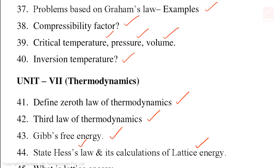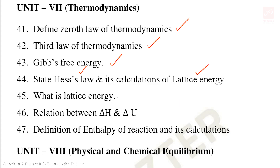In Unit 7 thermodynamics, important questions also include Hess's law statement, what is lattice energy, lattice energy calculation, the relation between delta H and delta U, and enthalpy of reaction — its definition and calculation. These are the 7th unit 2 mark and 3 mark golden questions.